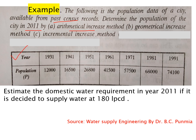Here is the data — year from 1931 to 1991, the population values are given from 12,000 to 74,100. We also have to estimate the domestic water requirement in year 2011, if it is decided that the water supply rate is 180 liters per capita per day.